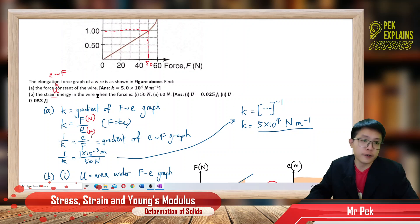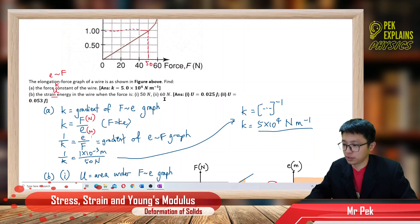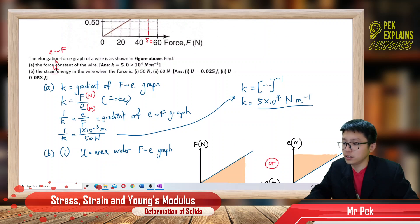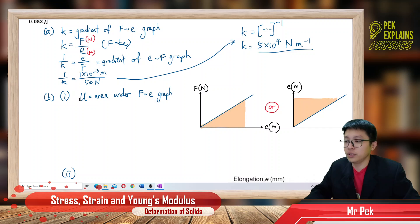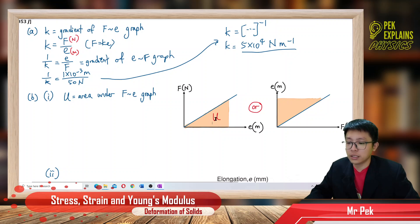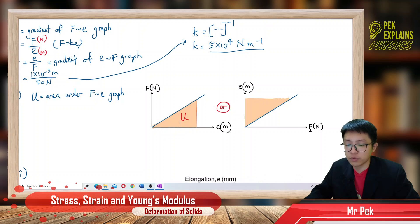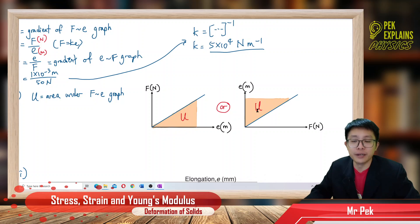Now I want to find the strain energy in the wire when the force is 50 Newton or 60 Newton. Strain energy is U. Strain energy is the area under the force elongation graph. So if you have a force elongation graph, U is the area under the graph. But now we have elongation versus force, so the area is also inverted — it becomes the area to the left, with the y-axis instead of x-axis.